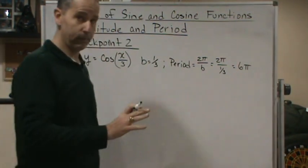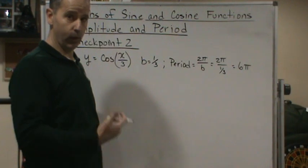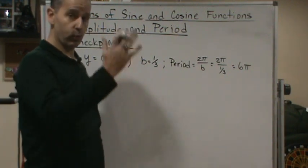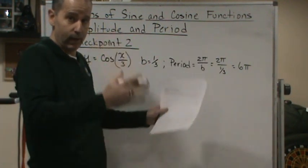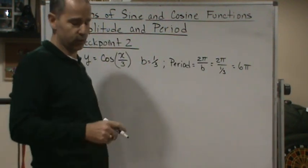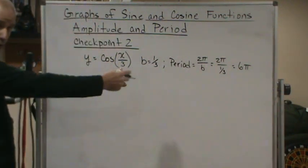Now what we want to do is understand that that is the period. So one period is going to go from zero to 6π, one cycle. What we're going to do is divide 6π by four, because we want to find those four equal pieces, because that's where the critical points are.